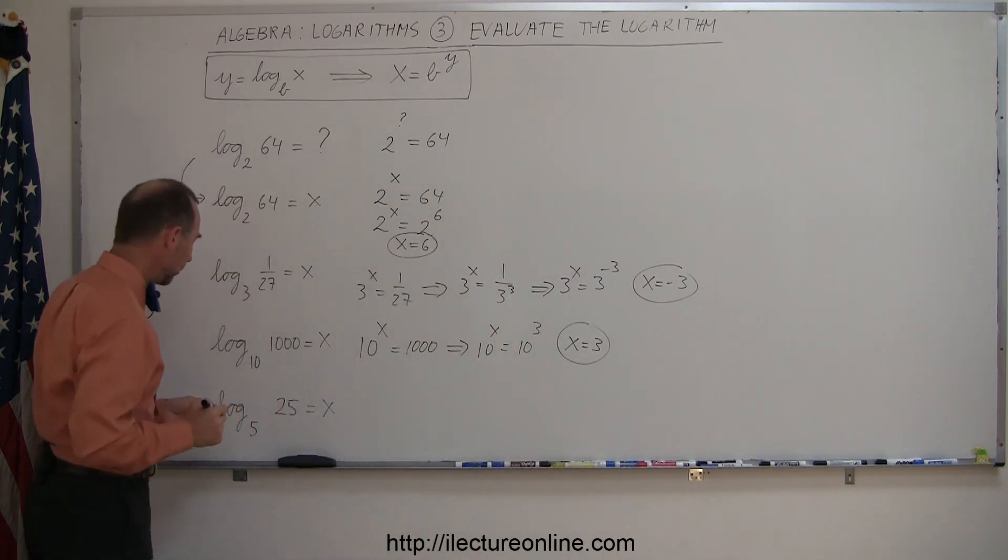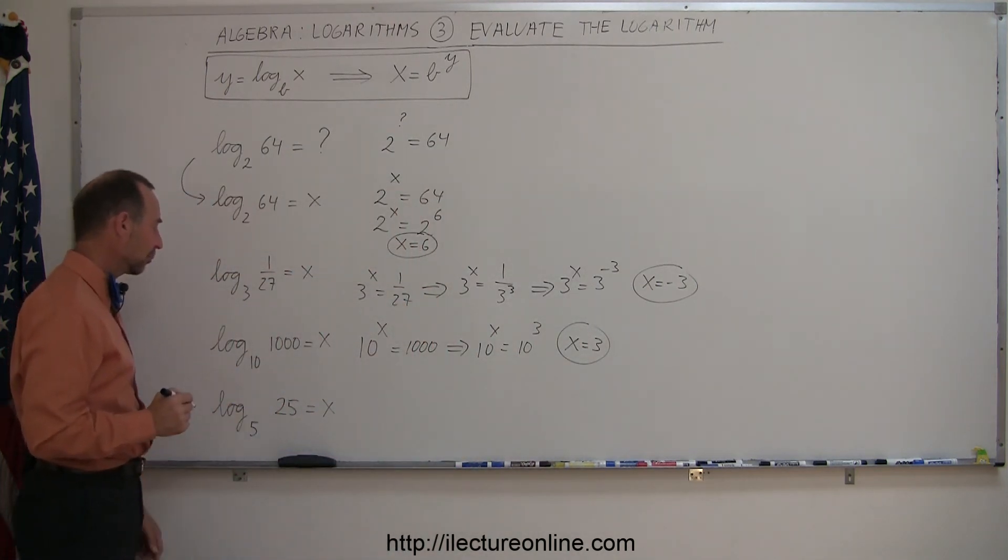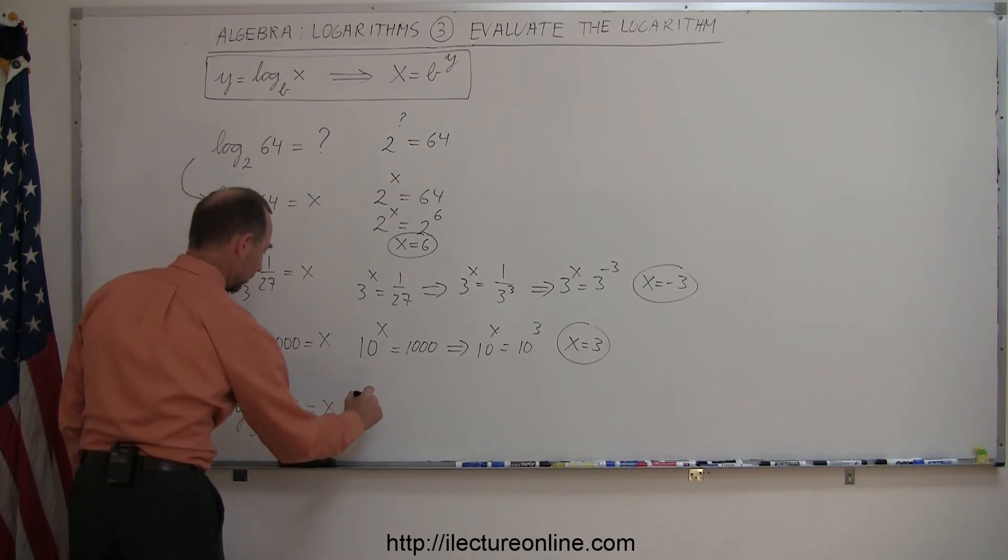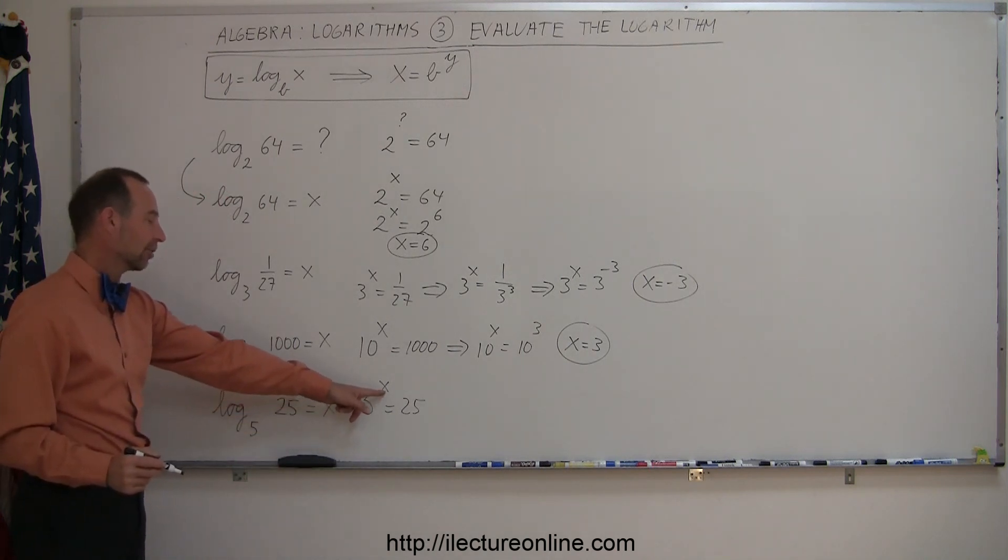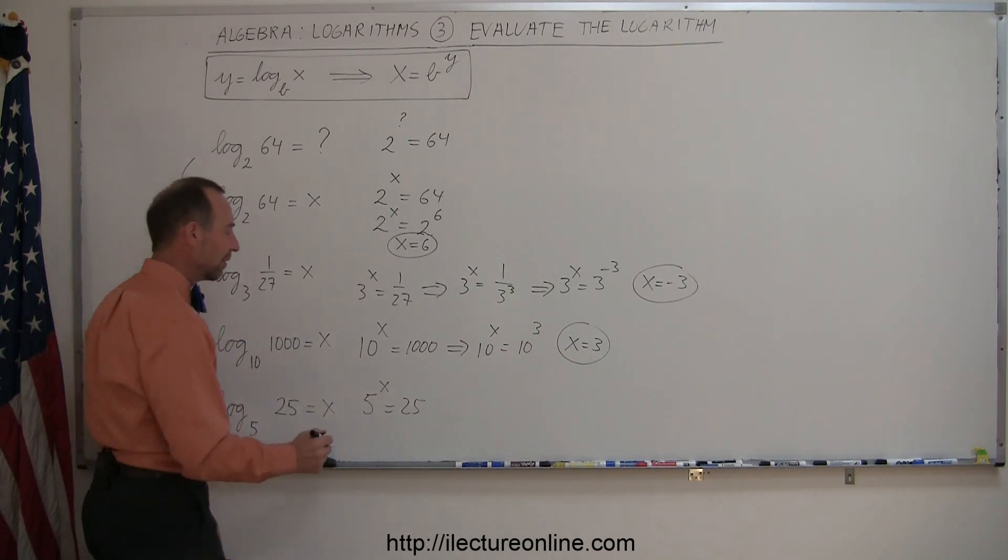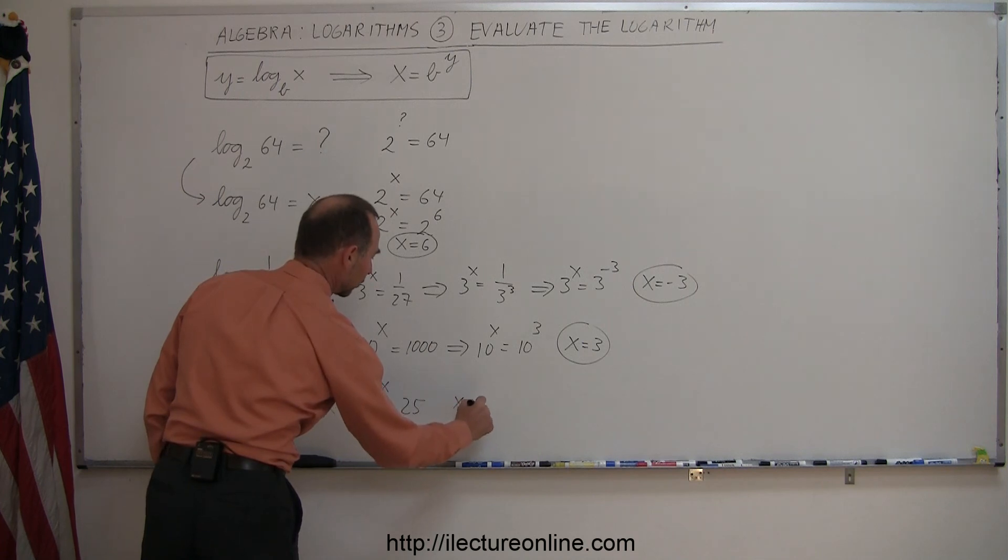And our final example, we have log to the base 5 of 25 equals x. So that means that the base 5 raised to the x power equals 25. And here you can clearly see that if x is 2, 5 to the second power is 25. So therefore x equals 2.